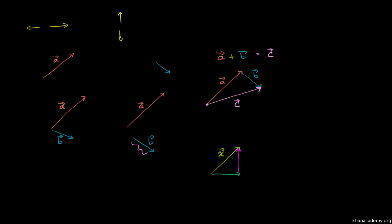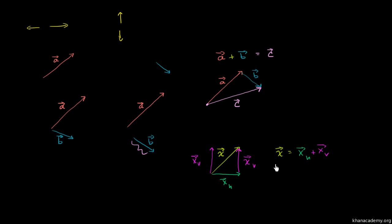The reason I did this is that expressing x as the sum of these two vectors breaks it down into its vertical component and its horizontal component. I could call this the vertical component — x vertical — and this over here the horizontal component — x horizontal. You can express vector x as the sum of its horizontal and vertical components. This is super powerful because it turns a two-dimensional problem into two separate one-dimensional problems: one acting in the horizontal direction, one in the vertical direction.